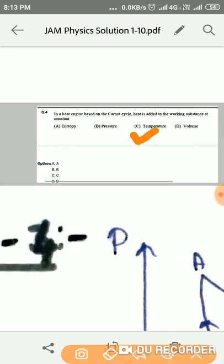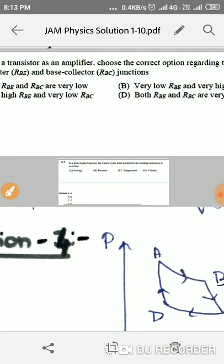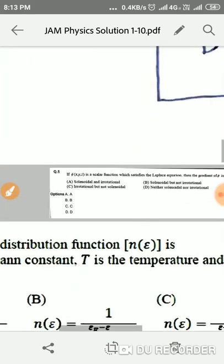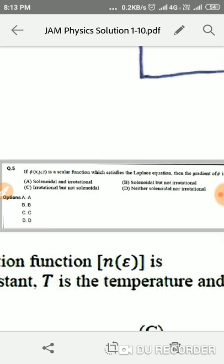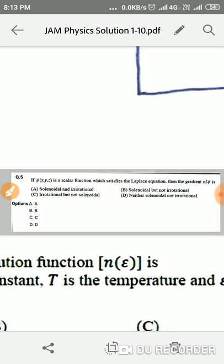Moving to the fifth problem, we are given a scalar function which satisfies the Laplace equation, then the gradient of phi is what. In this case, option A will be correct. The gradient of phi will be a vector that will be solenoidal and irrotational.